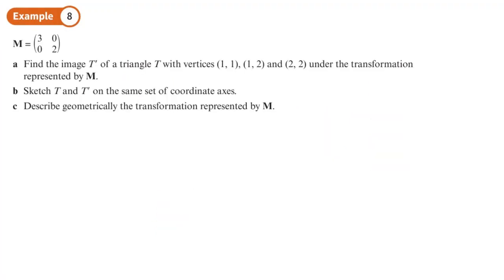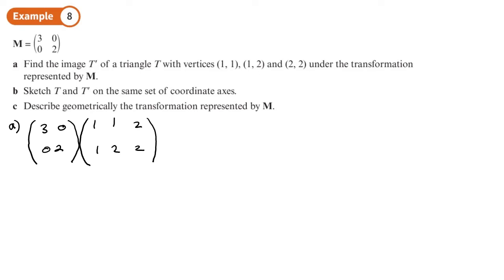We've got a matrix here. Find the image T' of the triangle with those vertices under the transformation represented by M. So we do the transformation: matrix (3, 0; 0, 2) applied to the points (1,1), (1,2), (2,2). Multiplying out: top row gives 3, 3, and 6.